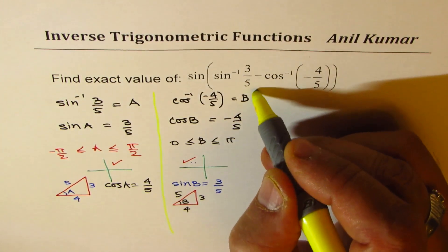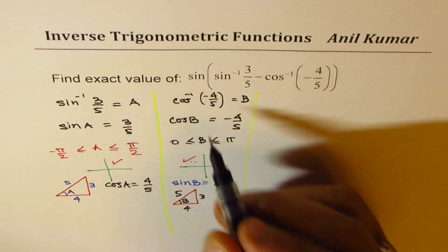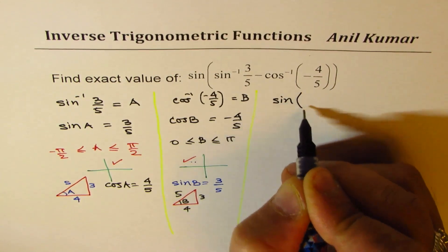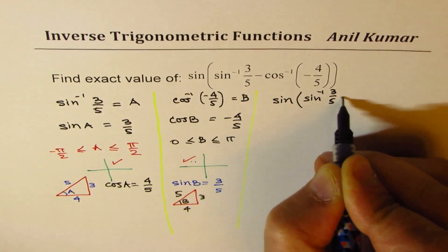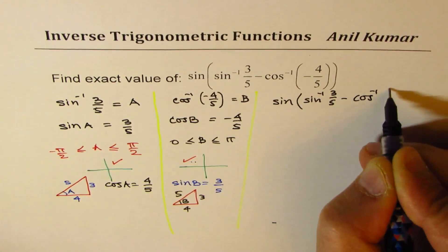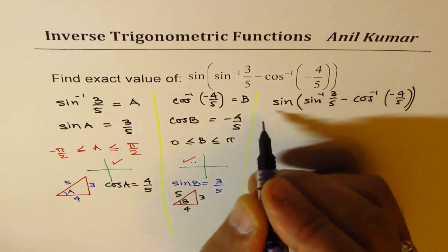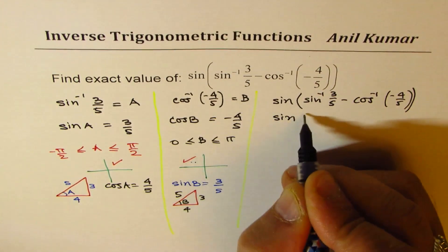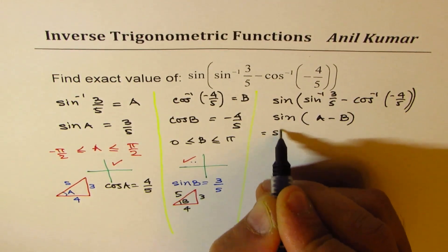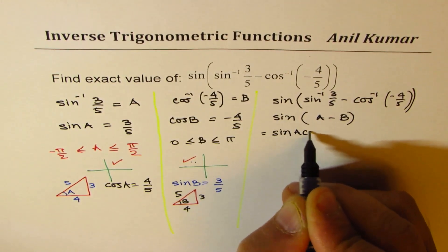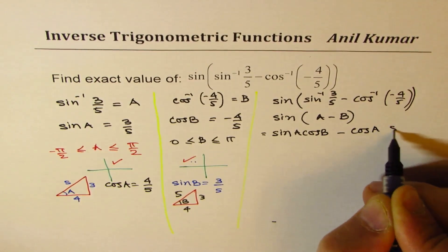And now, we can find the exact value of the expression itself. The expression can be written as, this expression is sine of sine inverse 3 over 5 minus cos inverse minus 4 over 5. Now, we can write this as, sine of A minus B. And that is, sine A, cos B minus cos A, sine B.